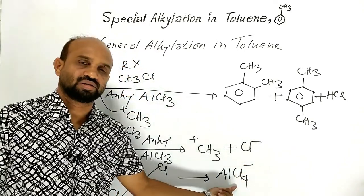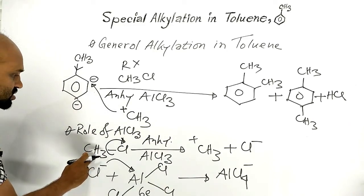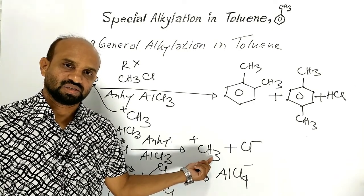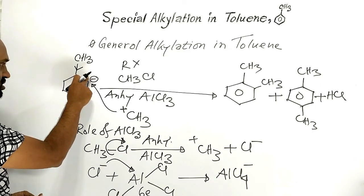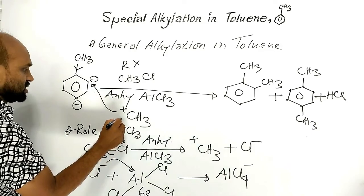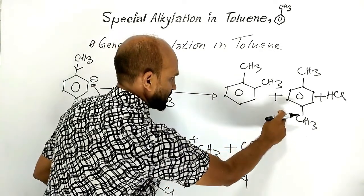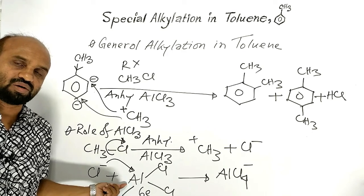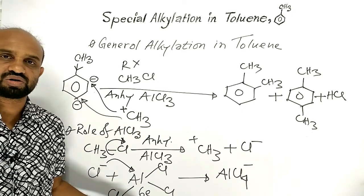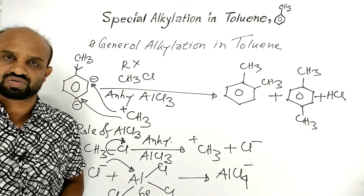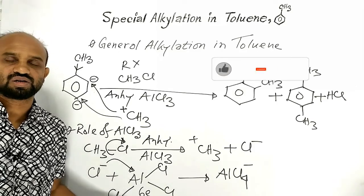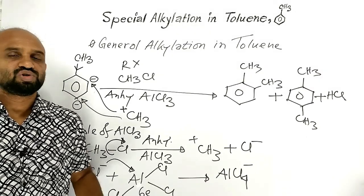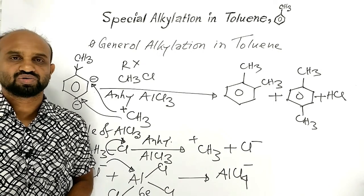Because of this tendency of aluminum chloride, methyl chloride undergoes heterolytic fission to form a methyl cation. This methyl cation combines with the ortho position to form ortho-xylene and with the para position to form para-xylene. Simply put, aluminum chloride helps produce the alkyl cation.